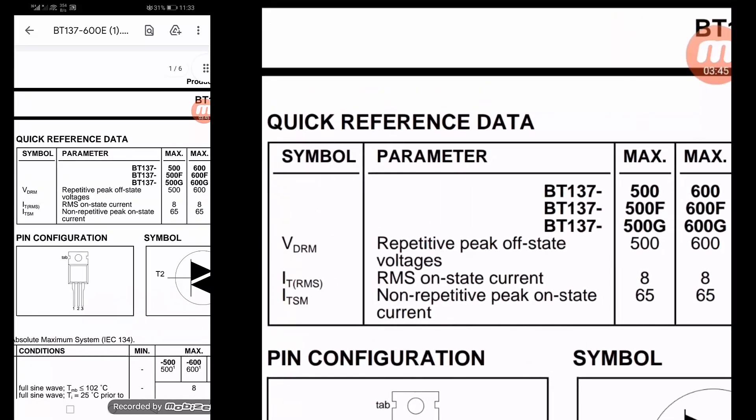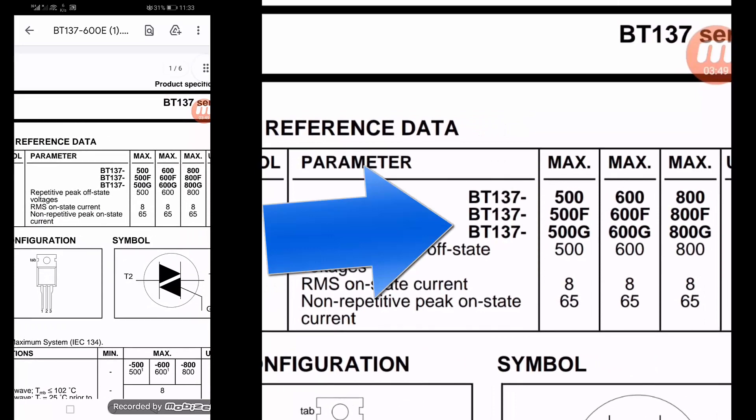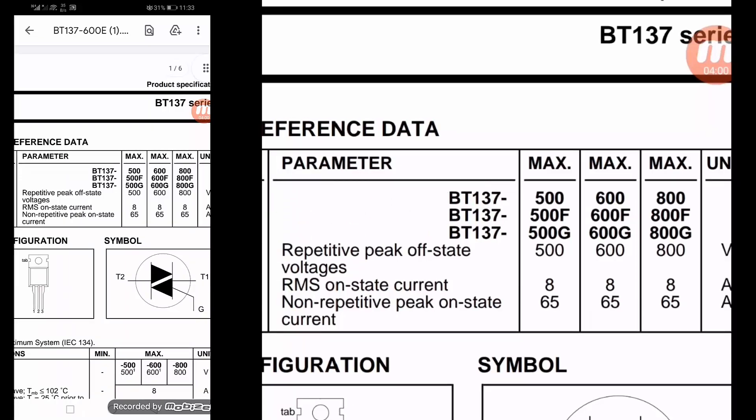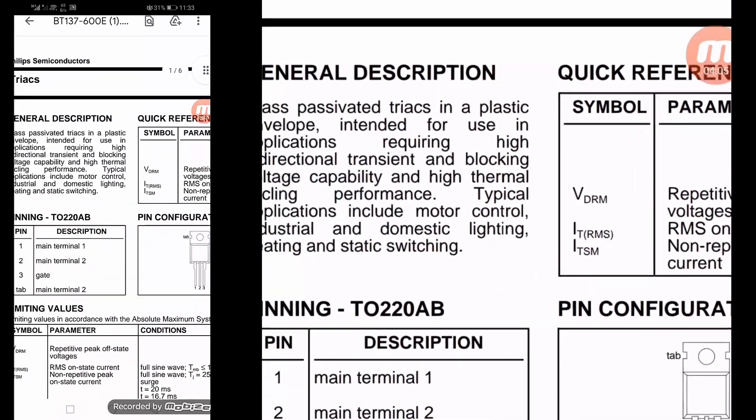In the quick reference data, BT137-600, that is 600 volt. If it is 500, that is 500. If it is 800, that is 800. RMS on-state current, that is 8 ampere. So it is an 8 ampere, 600 volt triac, and it is logic level triggered.